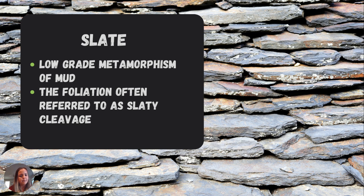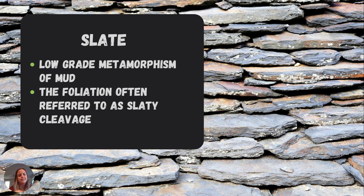Some metamorphic rocks display foliation in very small grains rather than large crystals. Slate is an example — a low-grade metamorphic rock from mud. The foliation is hard to see except in its breaking pattern. Those steps you see are called slaty cleavage, a breaking plane along the slate allowing it to break into slabs. If you look closely at the cross section of a slate, you can sometimes see lines where grains align parallel to each other but perpendicular to stress.